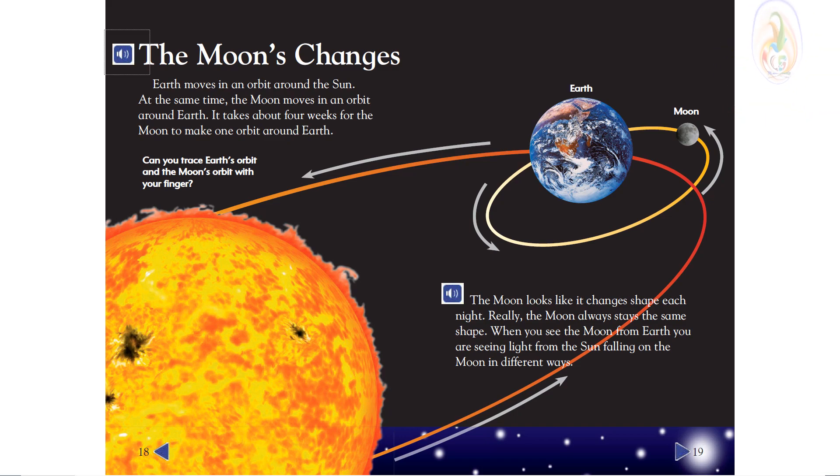Earth moves in an orbit around the Sun. At the same time, the Moon moves in an orbit around Earth. It takes about four weeks for the Moon to make one orbit around Earth.